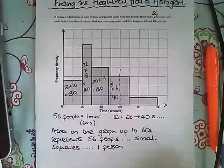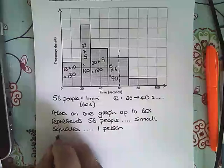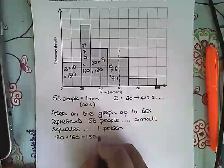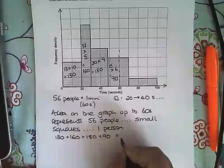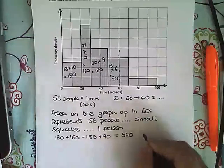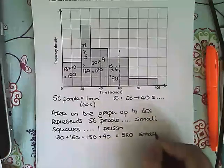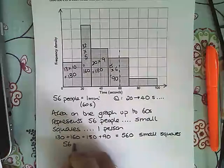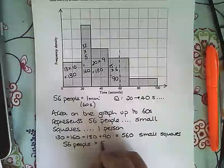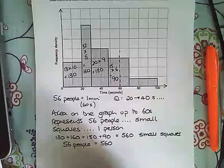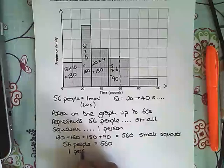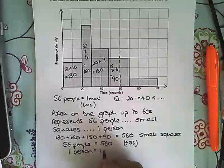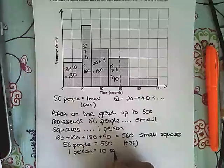In total, my small squares are 130 plus 160 plus 180 plus 90, which comes to 560 small squares. So 56 people equals 560 small squares. That means one person, if we divide both sides by 56, equals 10 squares.